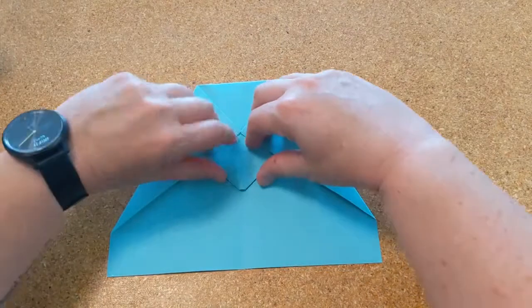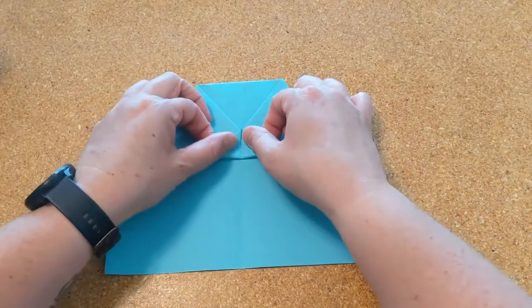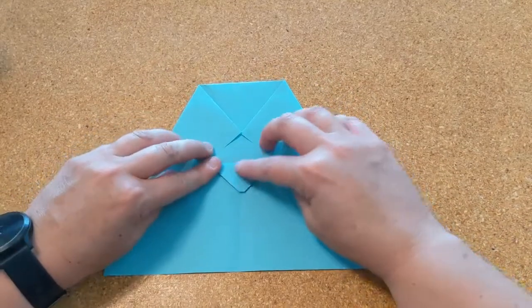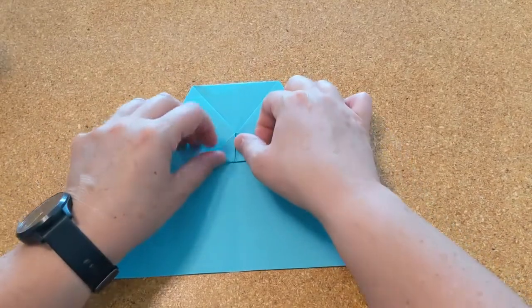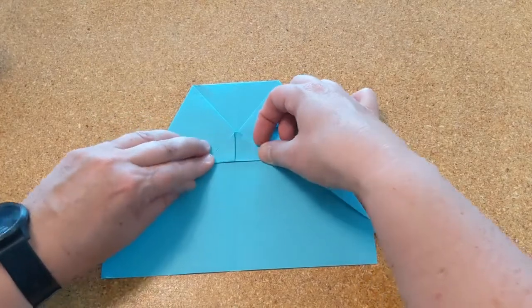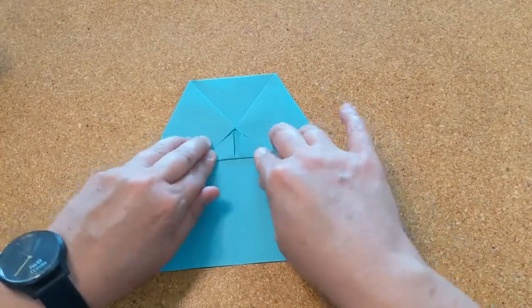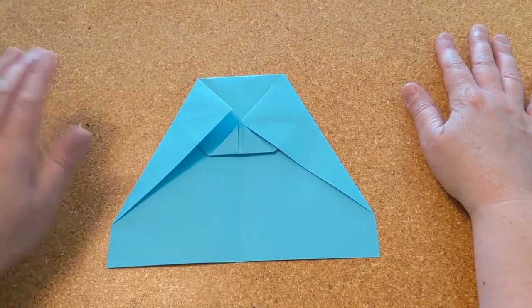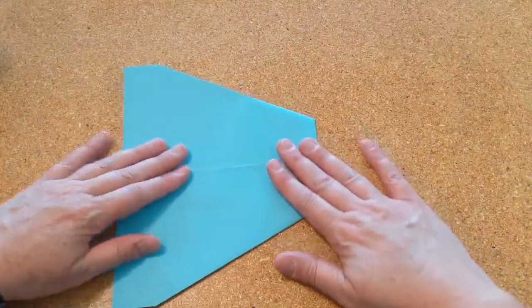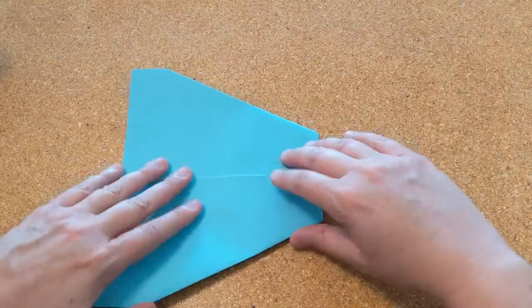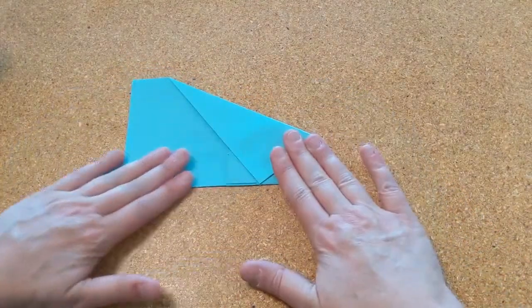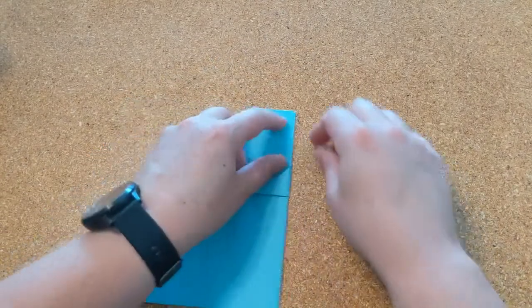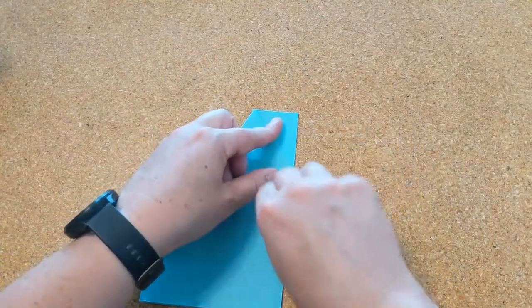Next you're going to flip up this triangle like this. See that little triangle right there? You're gonna flip it up so it meets with all the other points. Like that. Then flip your plane over and you're gonna fold it along that center crease like this. Make sure all of your creases are nice and tight.